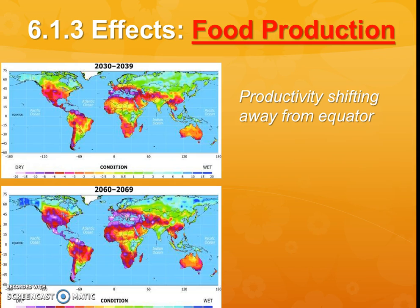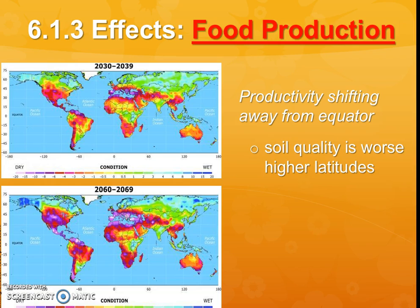With the climate changing, productivity is beginning to shift away from the equator because that area is now almost too hot for things to survive and may be getting drier. This means soil quality might be getting worse in some areas. It's also causing pests to spread, colder winters are getting shorter, and once in a while we'll have a blizzard or crazy event that no one's really prepared for.